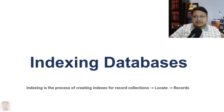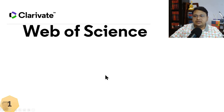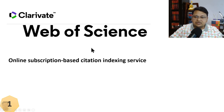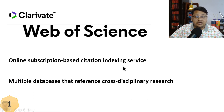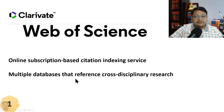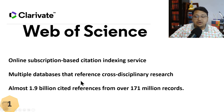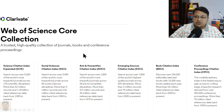We'll discuss different types of indexing bodies in this video. The first one is Web of Science. It is part of Clarivate Analytics and is an online subscription-based citation indexing service. It covers cross-disciplinary research and showcases almost 1.9 billion cited references from over 171 million records.